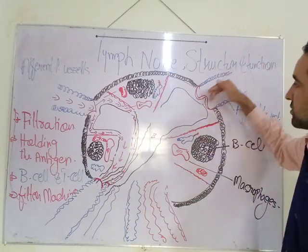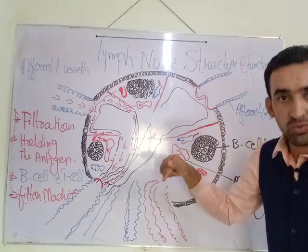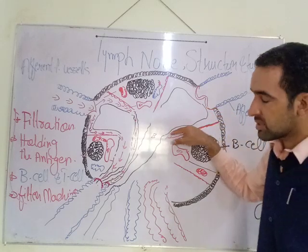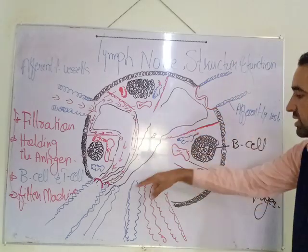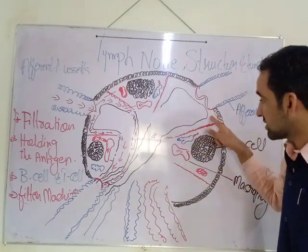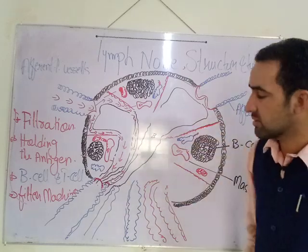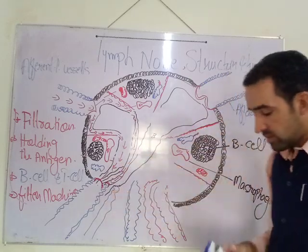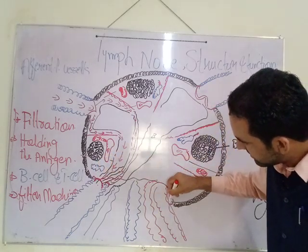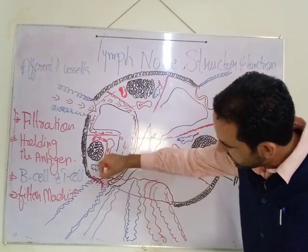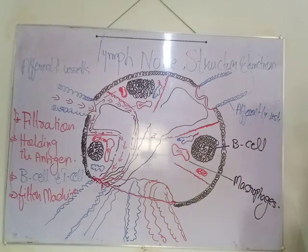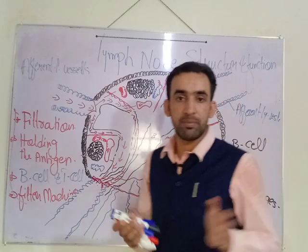Lymph comes to the lymph node through afferent lymphatic vessels, which may be two or three, and enters into the subcapsular sinuses. Then from the subcapsular sinuses it moves down through the cortical sinuses and third into the medullary sinuses. The point where the veins and efferent lymphatic vessels are present is called the hilum of the lymph node. So this is all about the lymph node.